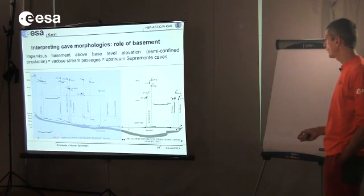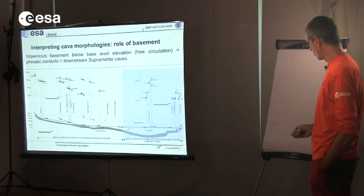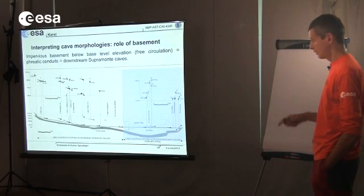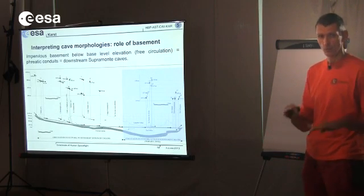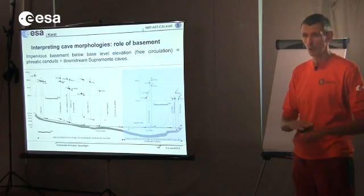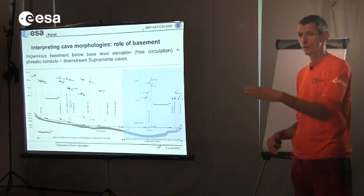In the upstream Suplamonte area, all the caves follow the contact between limestones, dolostone, and the granites or phyllites below. So the shape of the cave is more or less the shape of the basement rock. When we go downstream, the caves have left this contact zone because the contact zone between these two rocks is below the water table. So the cave follows more or less the water table level and is completely in limestone — it doesn't care anymore about these impervious rocks below.